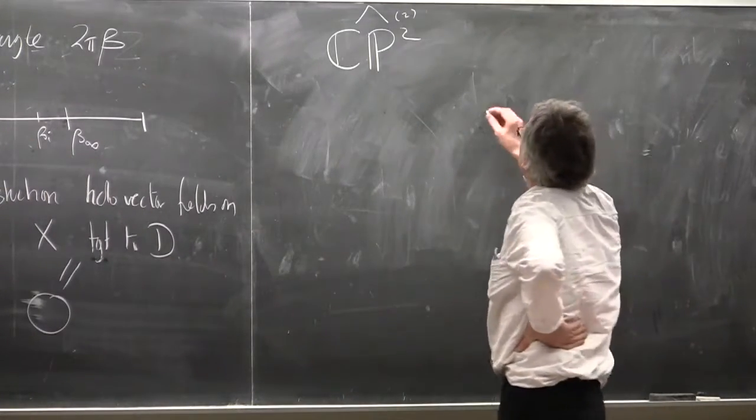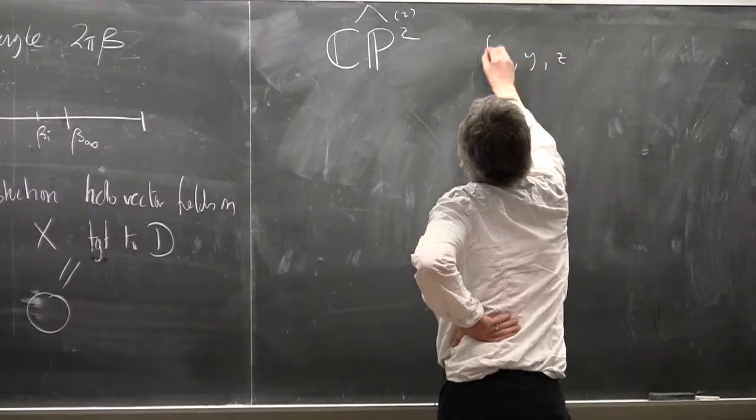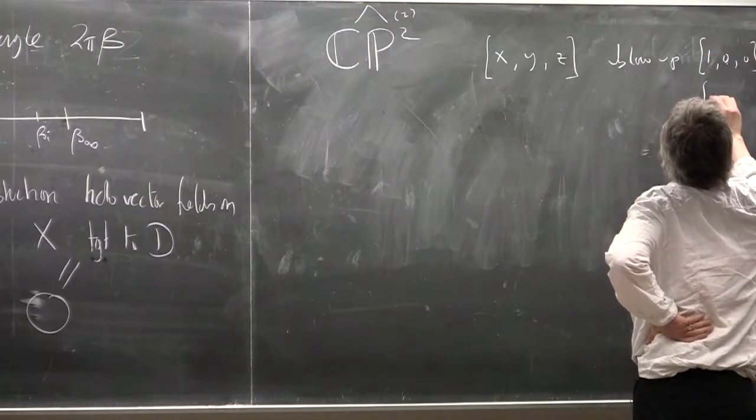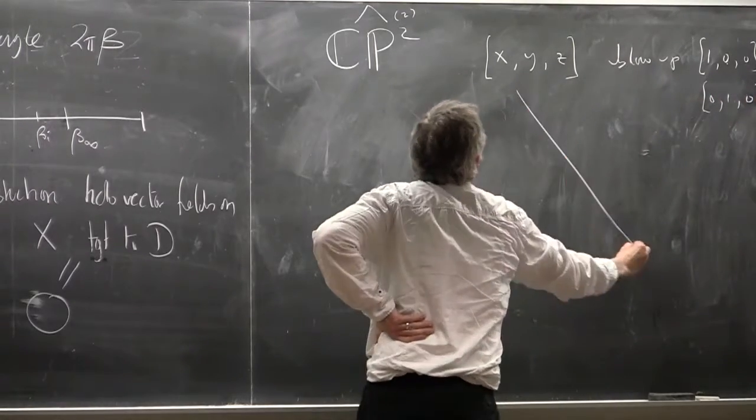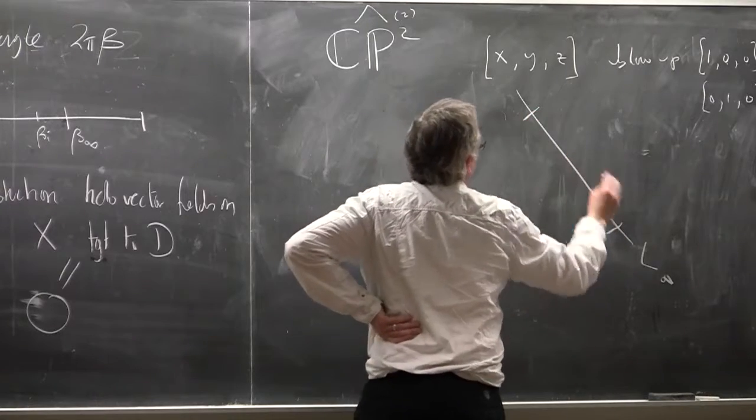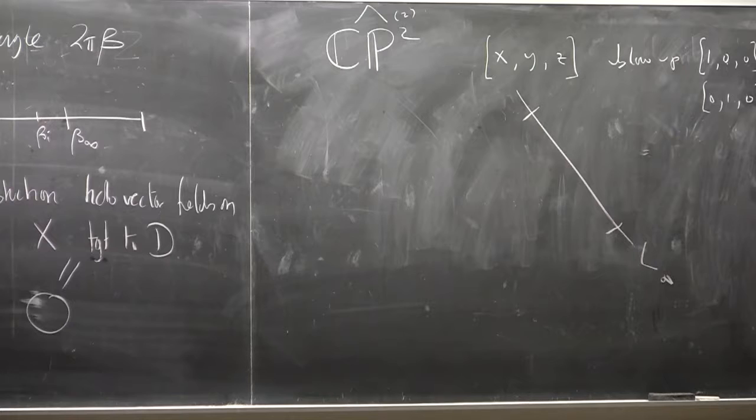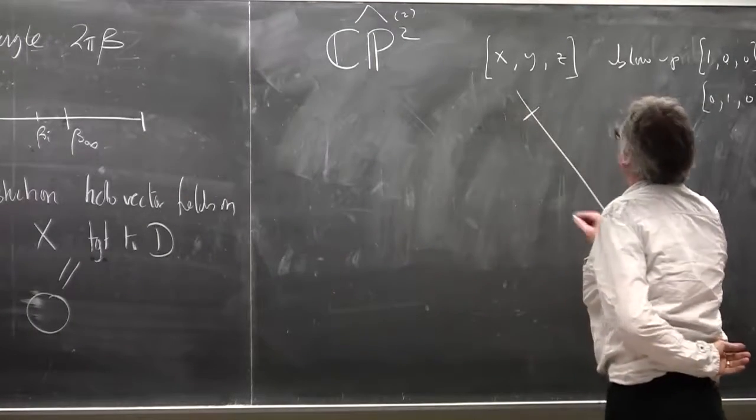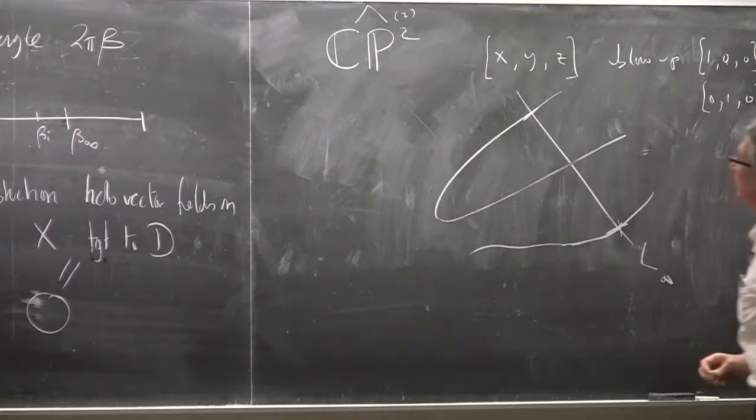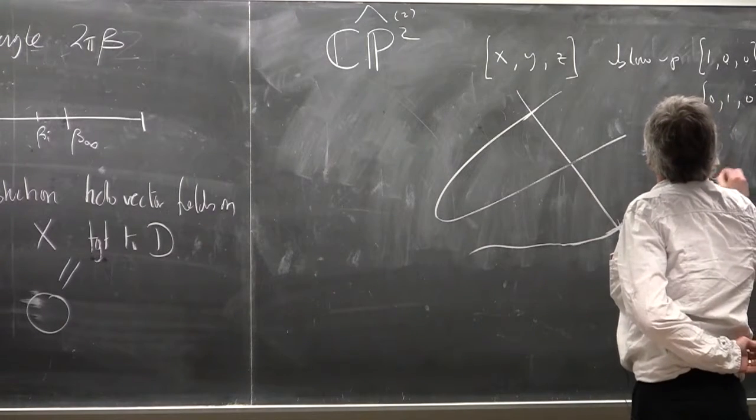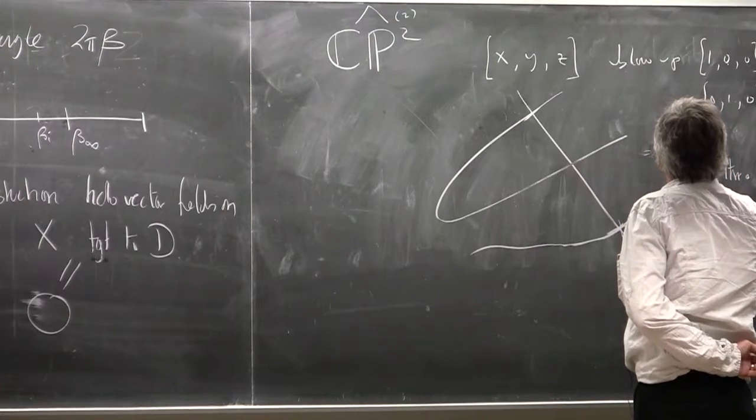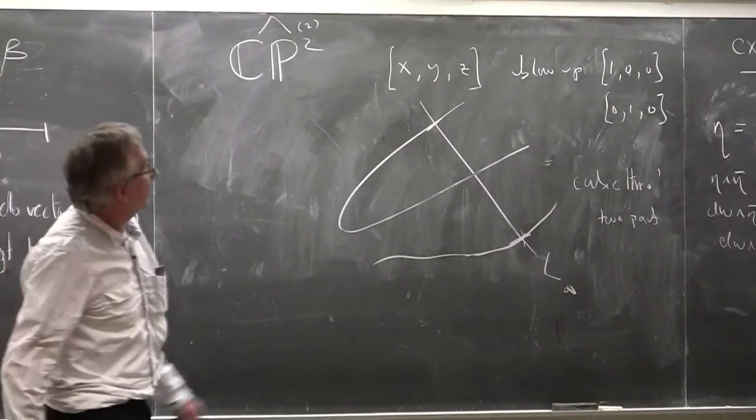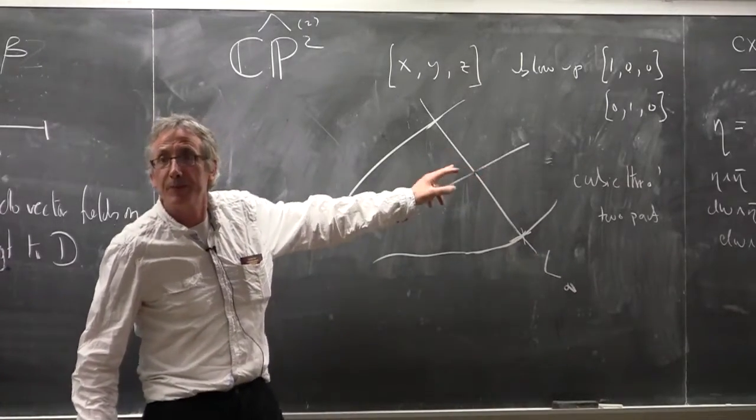We should do this. Let's take homogeneous coordinates x, y, z and blow up two points on the line at infinity. So we've got this is a line at infinity, these are our two points. Let's take a divisor in minus K that's just given by a cubic curve passing through these two points. So the generic case will be then when this cubic meets the line at infinity at one further distinct point. So let's first consider that.